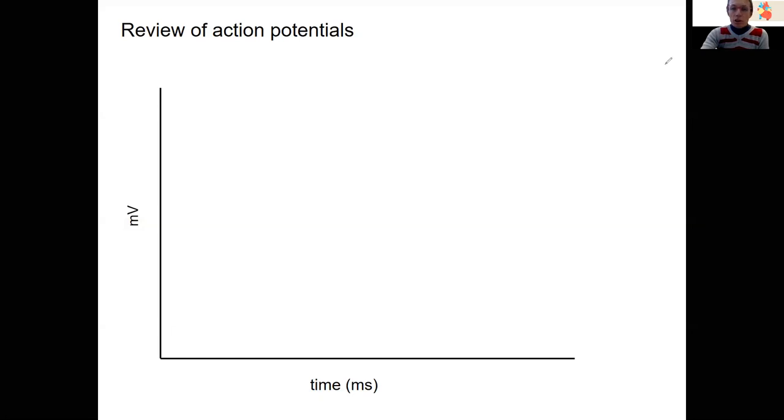Guess what we're going to do? We're going to draw an action potential, just a regular old action potential in a neuron. So this should be review. You should be doing this along with me.